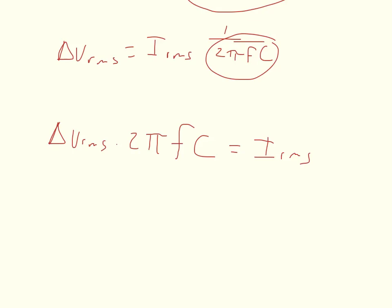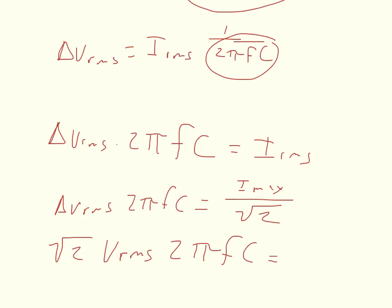And then we can substitute our equation for the maximum current. So we'll get delta V RMS times 2 pi frequency capacitance is equal to I max over the square root of 2. And then we can multiply the square root of 2 to the other side. And we get the square root of 2 times delta V RMS times 2 pi times the frequency times the capacitance is equal to the maximum current.